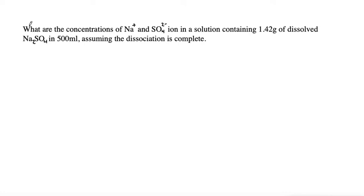So this problem says, what are the concentrations of Na+ and SO4 2- ions in a solution containing 1.42 grams of dissolved Na2SO4 in 500 milliliters, assuming the dissociation is complete?